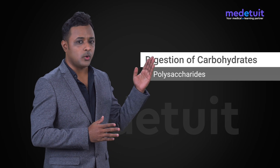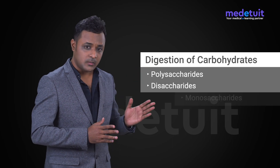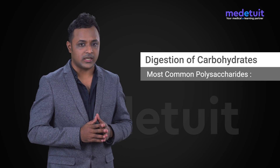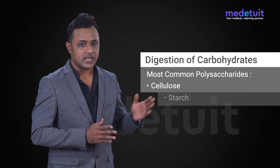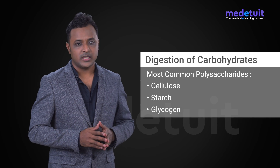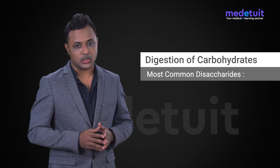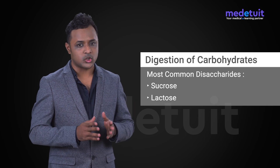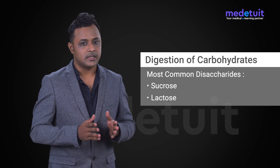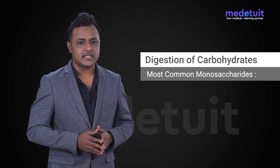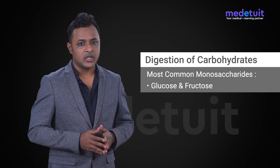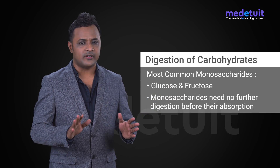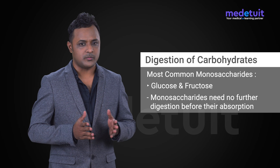Such as polysaccharides, disaccharides, and monosaccharides. The most common polysaccharides in our diet are cellulose, starch, and glycogen. The most common disaccharides are sucrose, which is from sugar, and lactose, which is from milk. Monosaccharides common in our diet are glucose and fructose, and these monosaccharides do not require any further digestion before they can be absorbed.